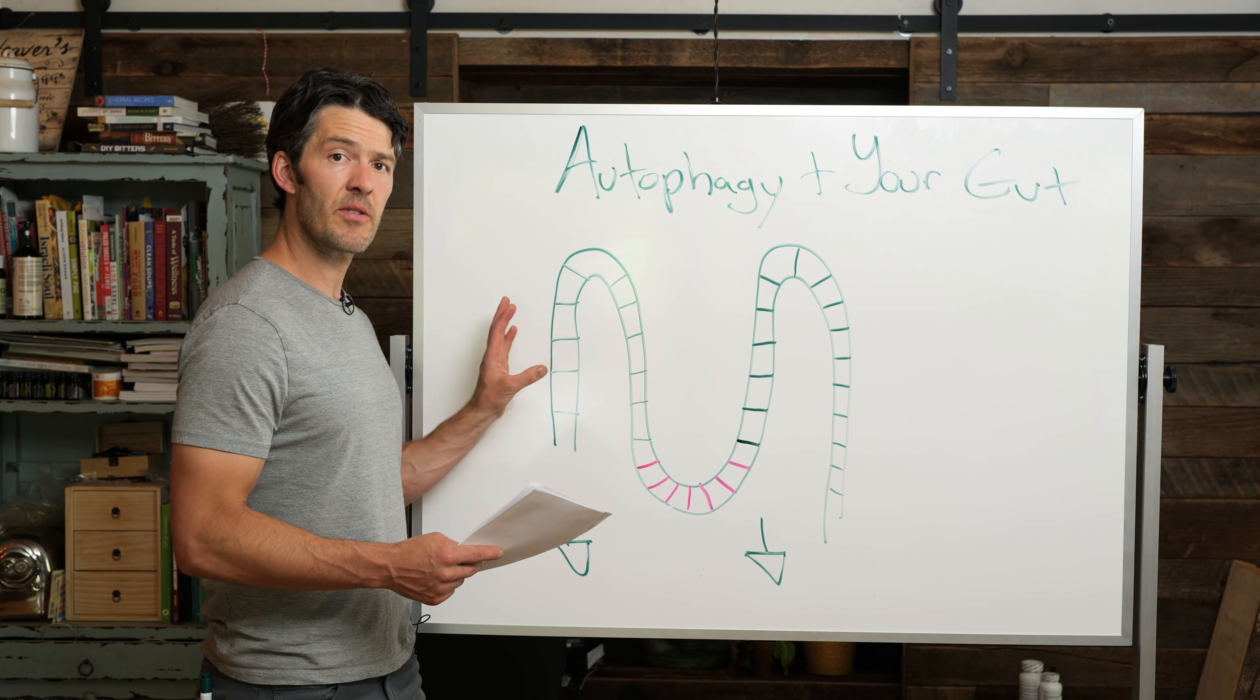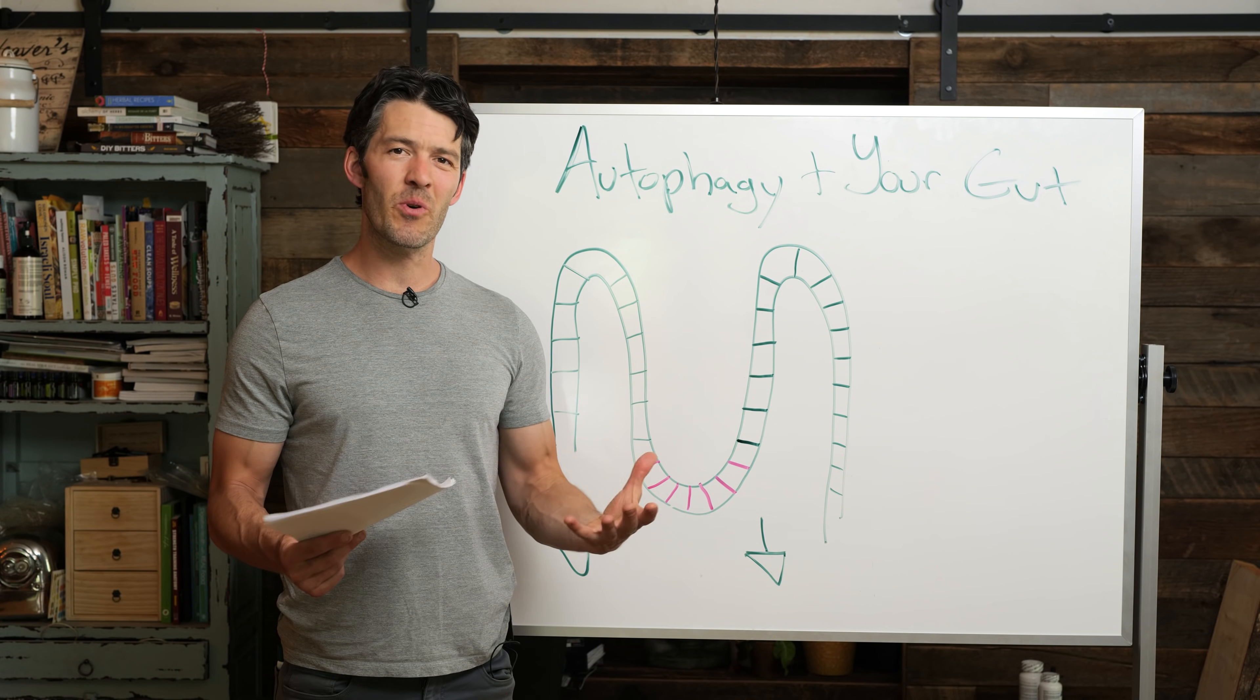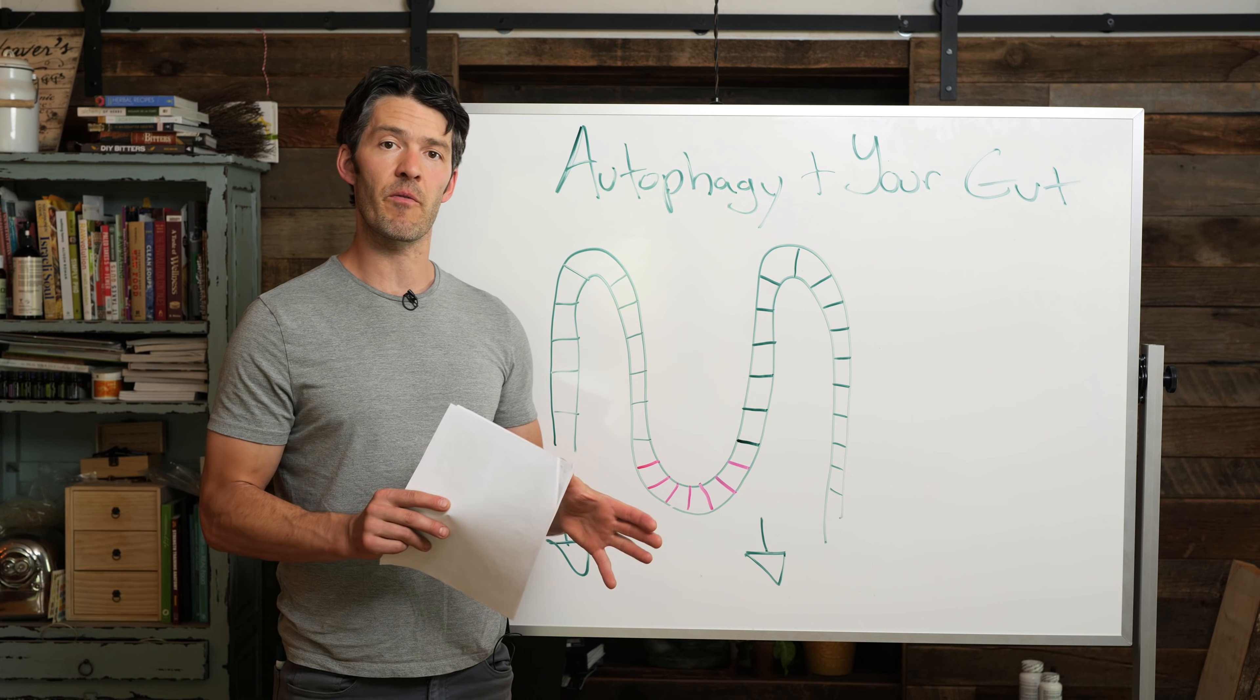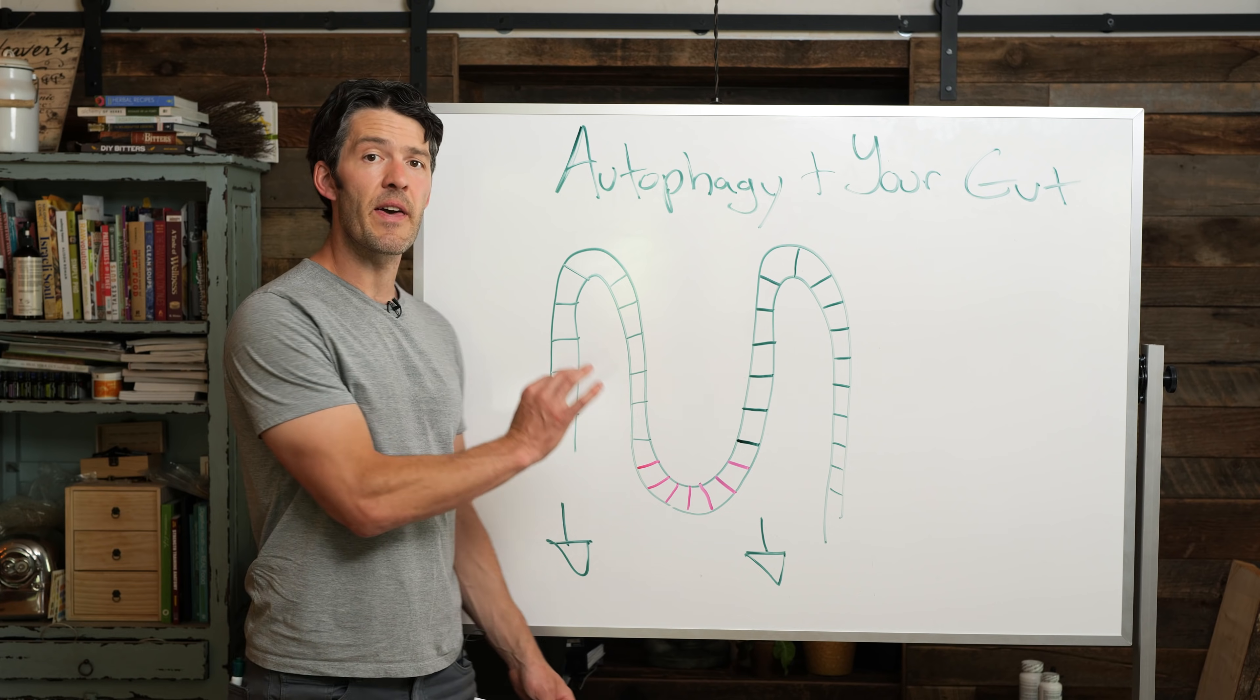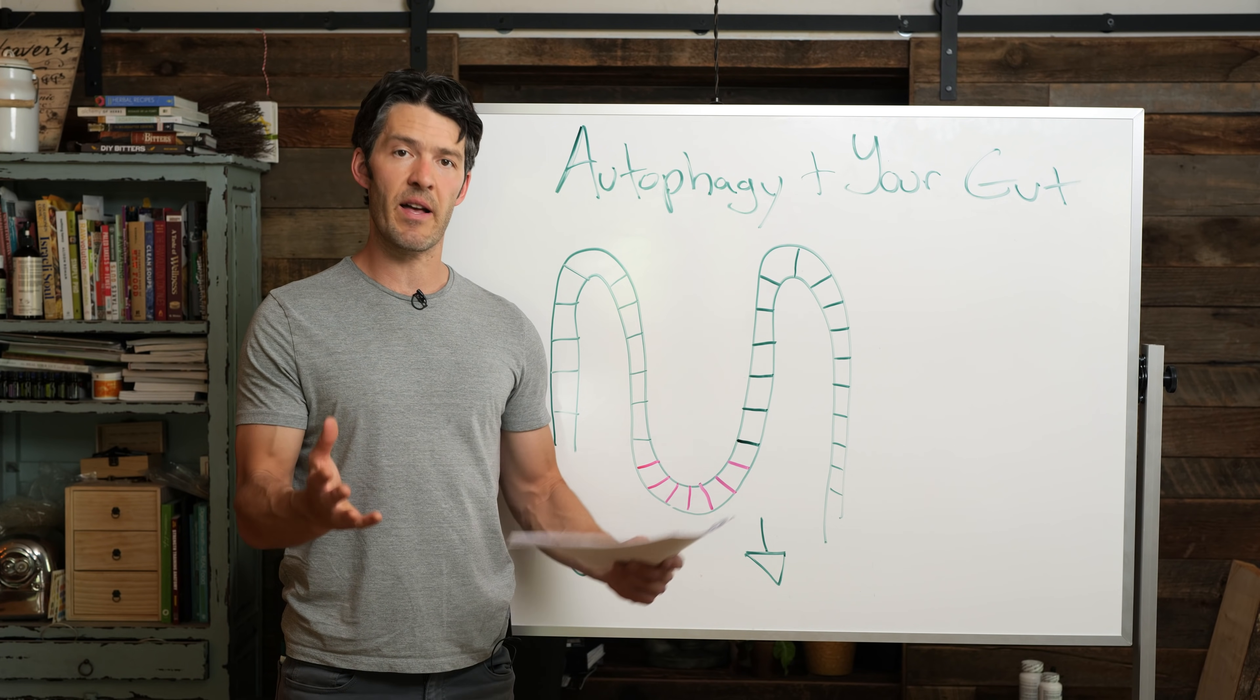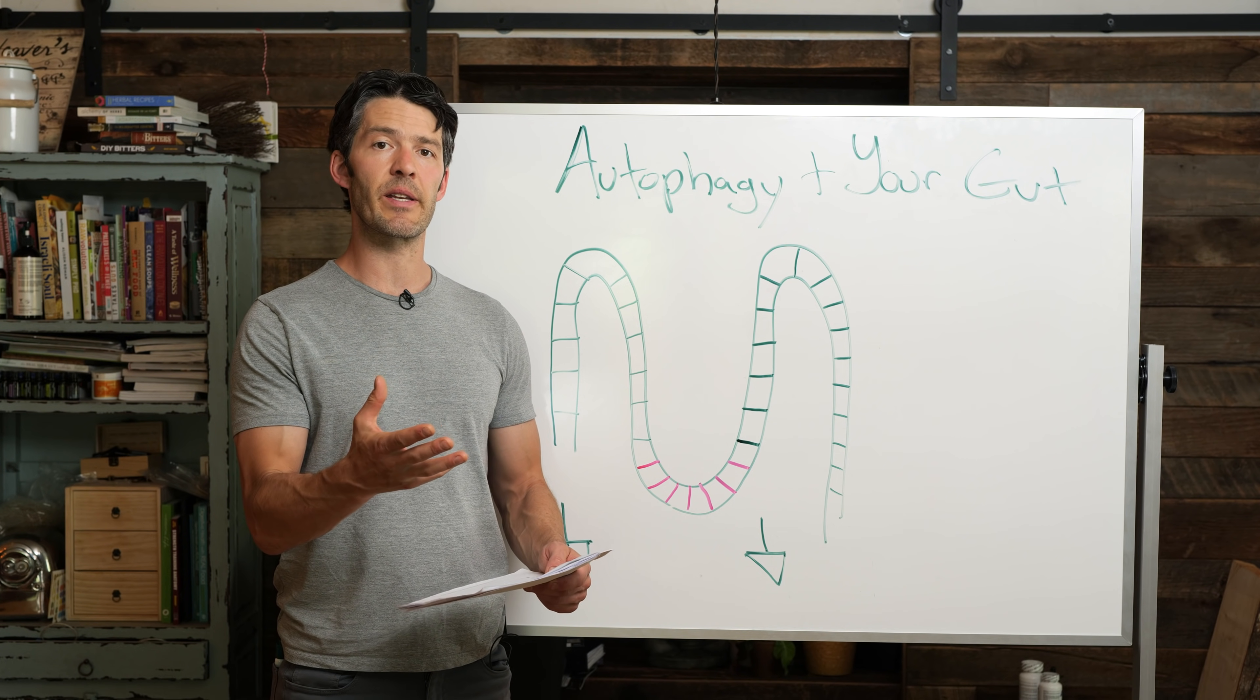What we have here is this intestinal epithelial layer, which is a really simplified and dumbed-down version of your small intestine. Right here, we're going to hone in on a specific cell type that is improved. The function of that cell type is improved when autophagy is upregulated.